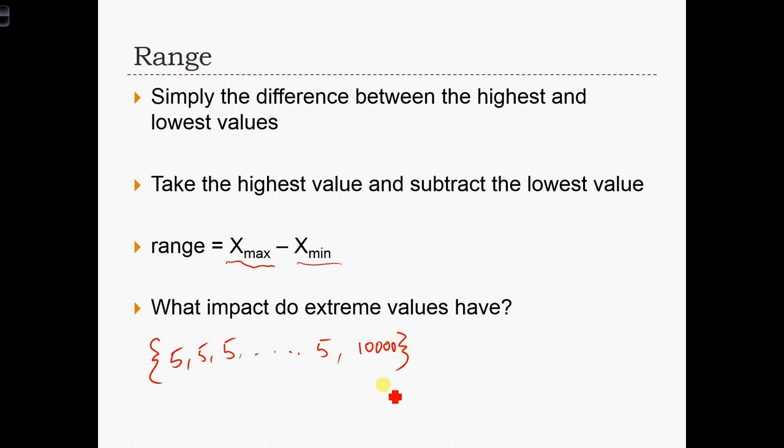What impact is this single data value going to have on the range of our set? Imagine the set that only considers the fives. If that were the case, then the range would equal 0.